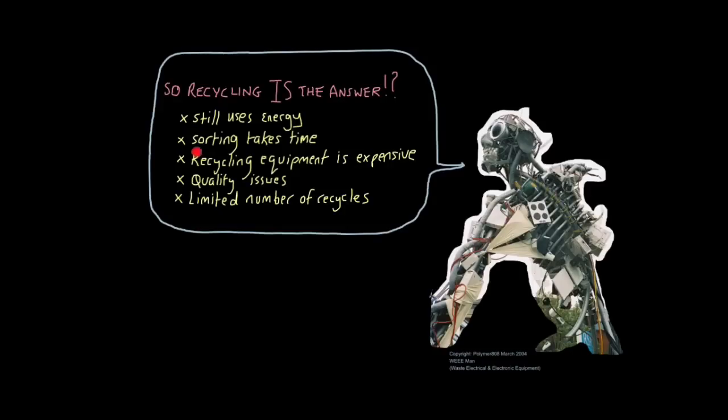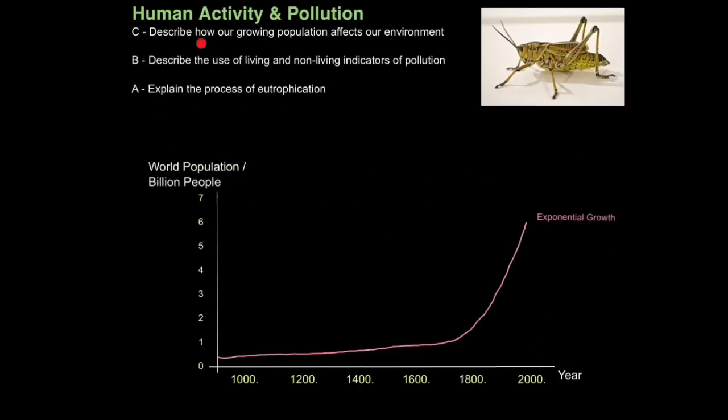Secondly, it's very time-consuming. Sorting takes time. You can actually buy equipment to sort for you, but that equipment's very expensive. Recycled products can have lower quality. For example, recycled toilet paper is very noticeably different or poorer in quality. And also some materials can only be recycled a limited number of times. You can't just keep on recycling something because if the quality is reduced, then it just can't go on forever. So that's how our growing population affects our environment.